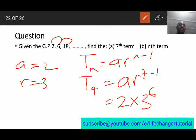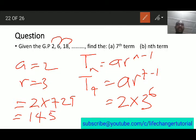So, that is going to give us 2 times 3 raised to power 6, which of course means 2 times 729, which is going to be 1458 as the answer to that question.